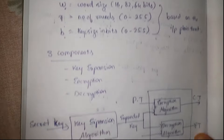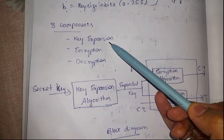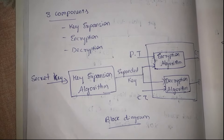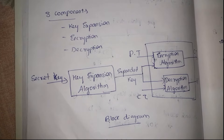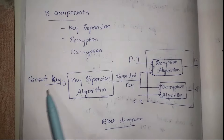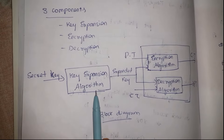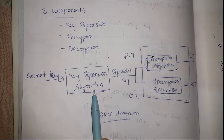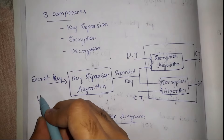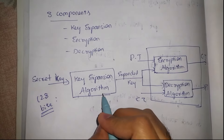All three parameters are decided based on the plain text. In this algorithm we have three components: key expansion, encryption, and decryption. As we know, symmetric key encryption uses a single key for both encryption and decryption. The secret key is given to the key expansion algorithm, which generates many sub-keys based on the secret key. The secret key is typically 128 bits.